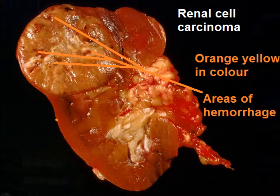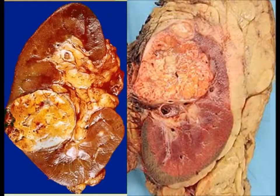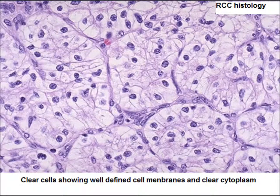The tumor is orange-yellow in color with areas of hemorrhage due to necrosis, as tumor cells undergo necrosis when they divide. There are many histological appearances; the most common is clear cell renal carcinoma, which shows very well-defined membranes and clear cytoplasm.